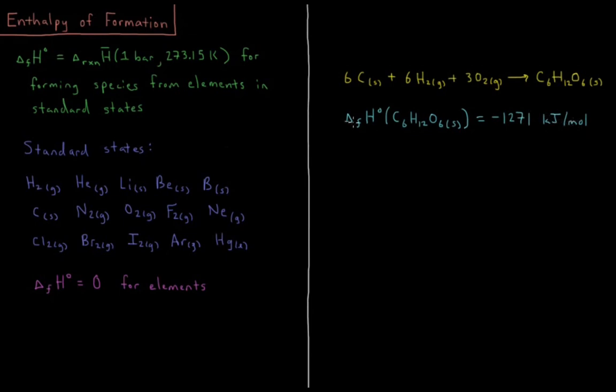So there are a lot of tables that you can look up these things in for a given chemical species. You can also often find these things at the back of textbooks or various internet databases. But every single chemical species has its own unique enthalpy of formation and that's going to be very useful to us in calculating the enthalpy changes of various chemical reactions.